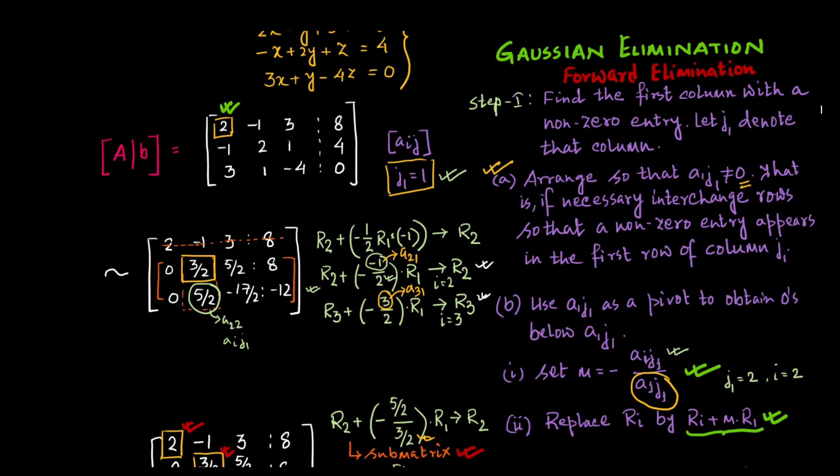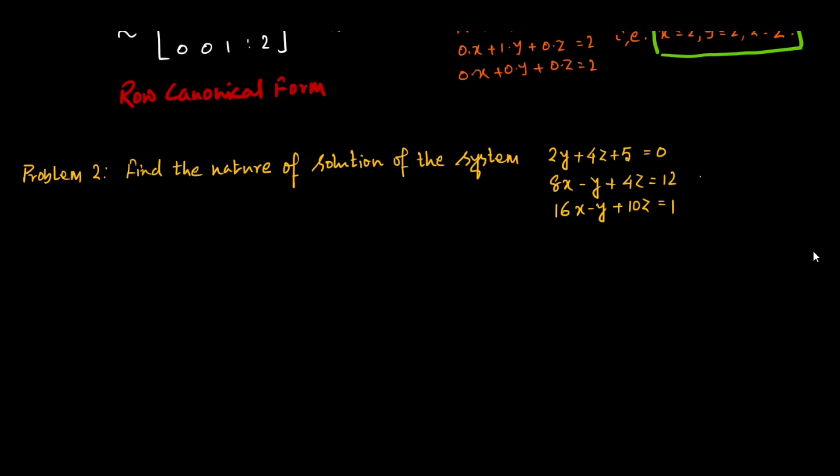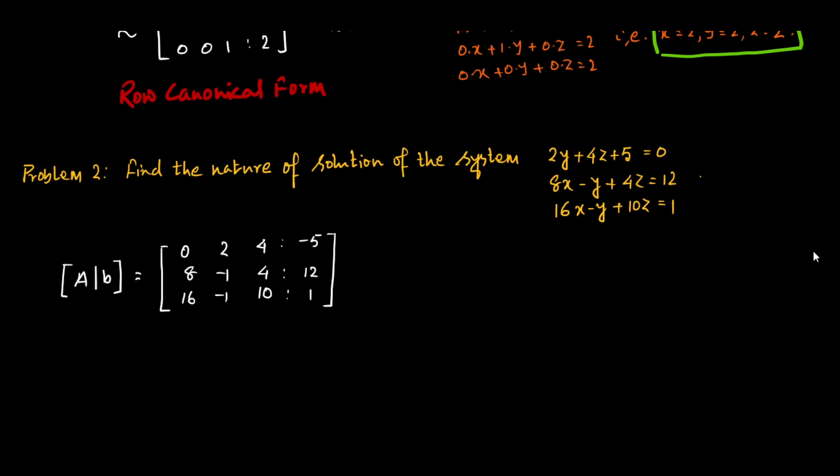The second problem is: find the nature of solution of the system 2y plus 4z plus 5 equals 0; 8x minus y plus 4z equals 12; 16x minus y plus 10z equals 1. Note that the first equation has no x term and the constant is on the left side. The augmented matrix is: 0, 2, 4, minus 5; 8, minus 1, 4, 12; 16, minus 1, 10, 1.